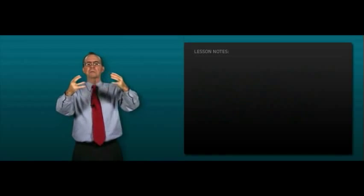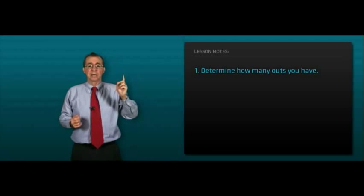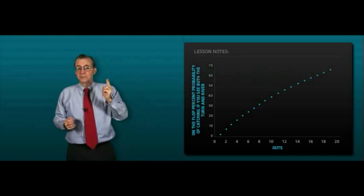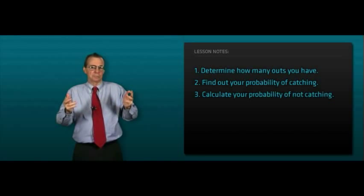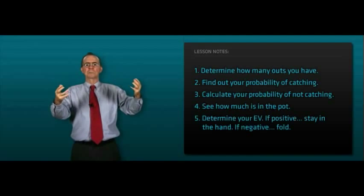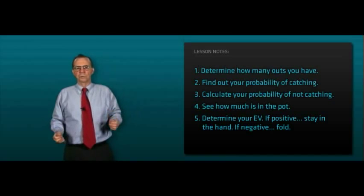You're going to use the same general procedure as before. Number one, you're going to determine how many outs you have, but now you're going to use the flop graph to find out your probability of catching. You'll calculate your probability of not catching, see how much is in the pot, and then determine your expected value. If it's positive, you stay in with either a call or raise; if negative, fold.